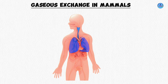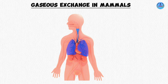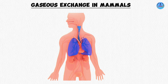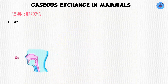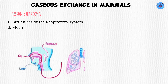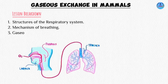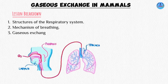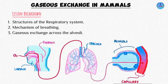In our lesson today, we are going to discuss the mechanism of gaseous exchange in mammals. Our lesson is going to be broken down as such: number one, what are the structures involved in the respiratory system in mammals? Number two, how does inhalation and exhalation occur in mammals? And lastly, how does gaseous exchange occur across the alveoli?